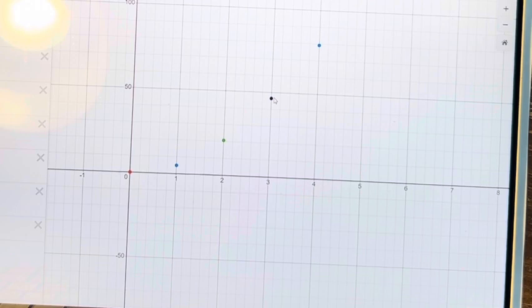So in order to estimate at t equals 3, we can take t equals 4, which is at 75, and t equals 2, which is at roughly 25, and we want to find the slope of the line between them.